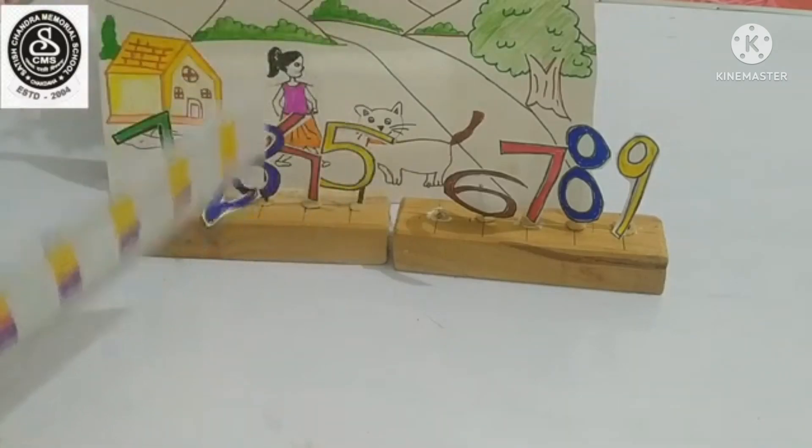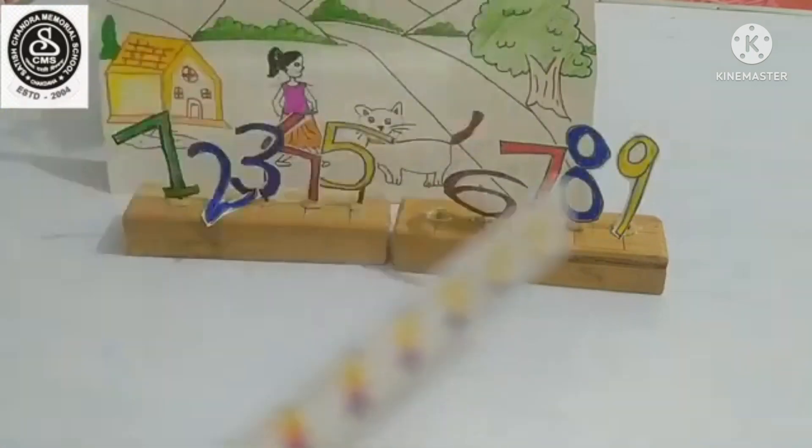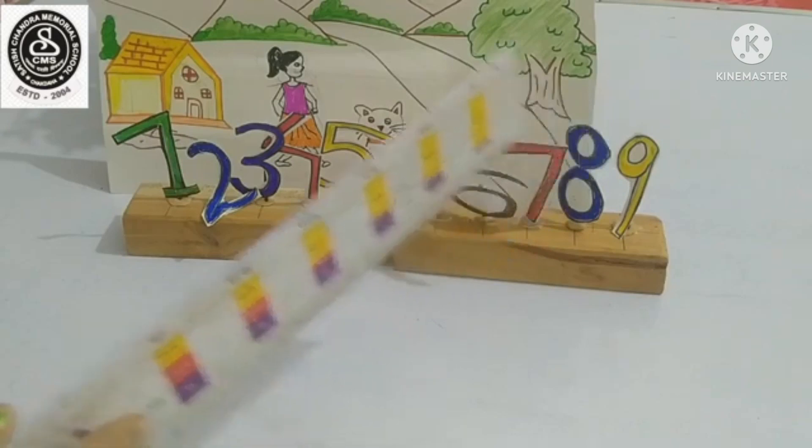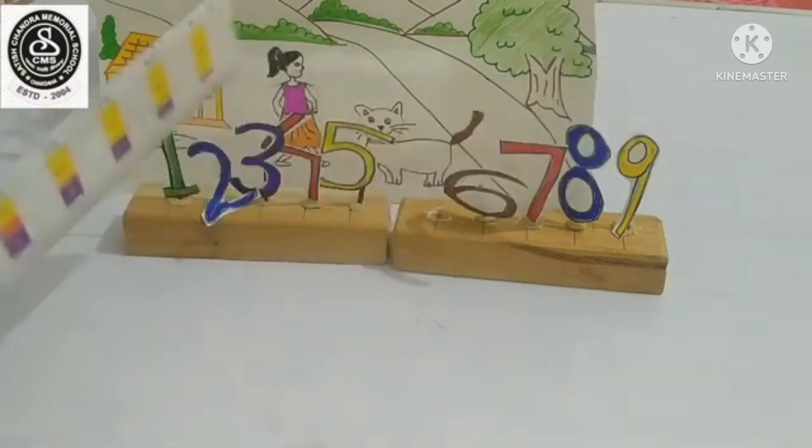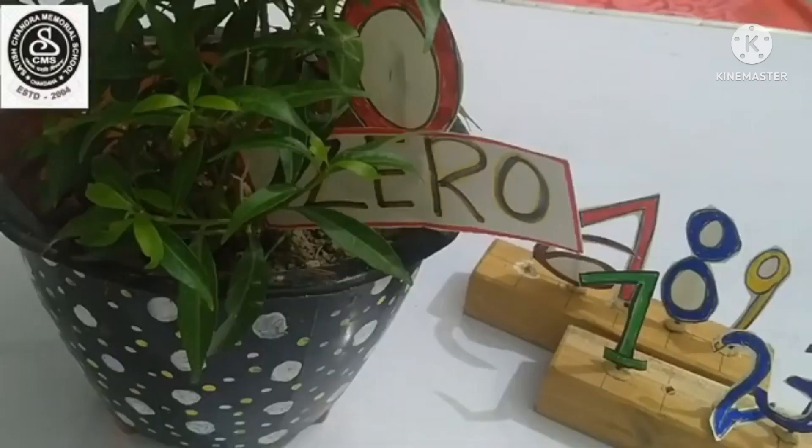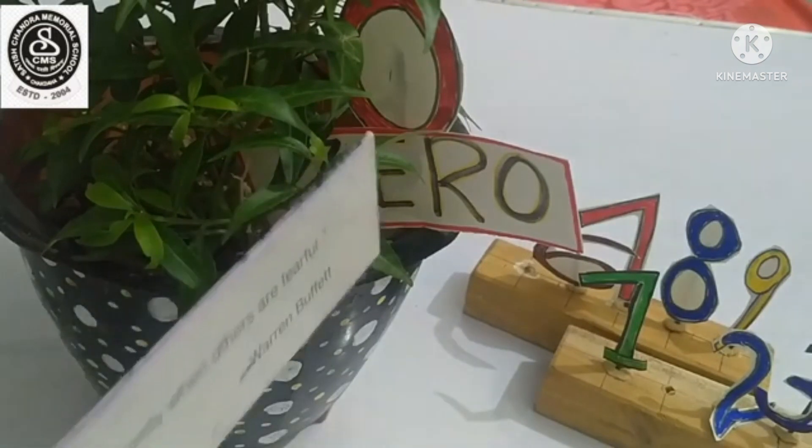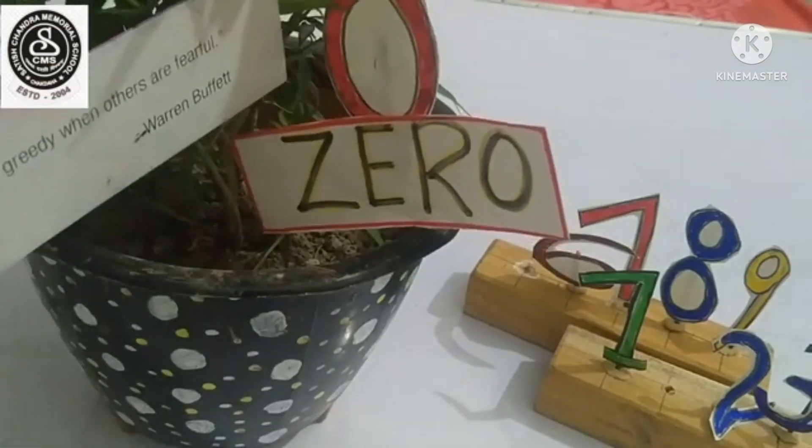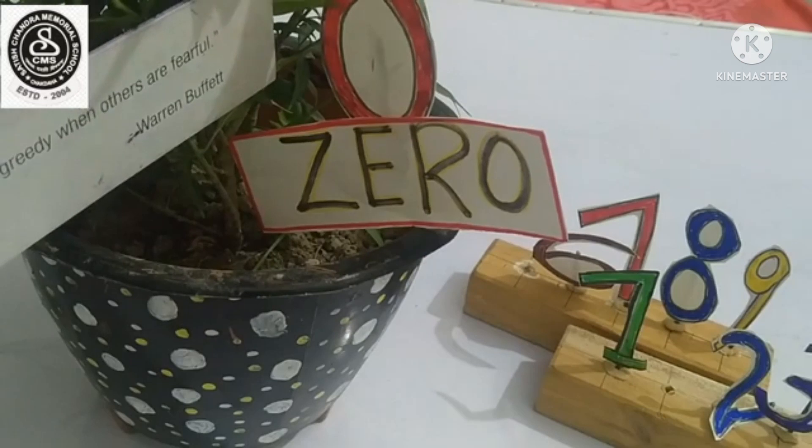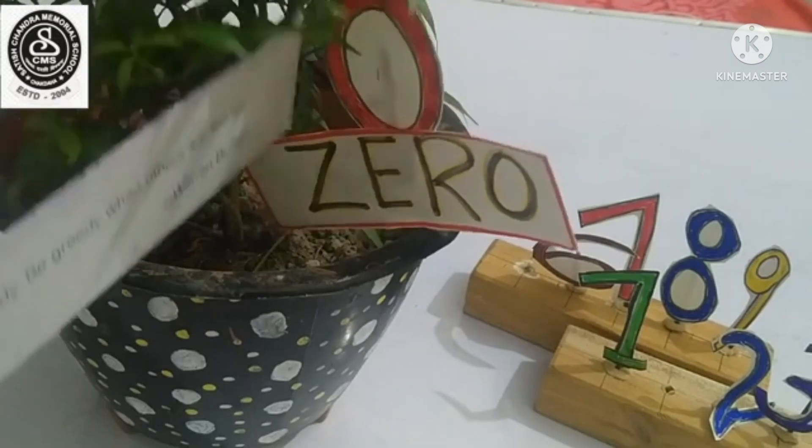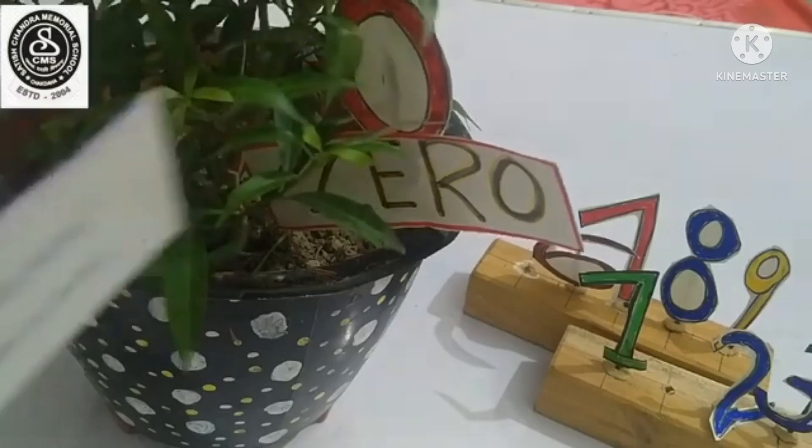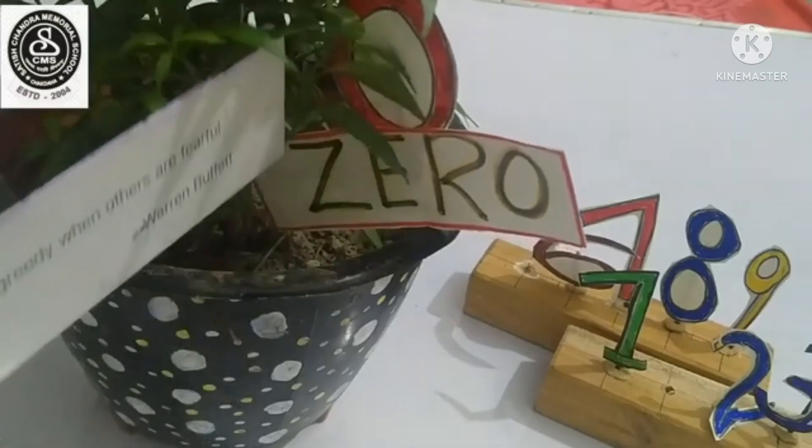The teacher ordered the numbers to find zero. All the numbers searched for zero, but they could not find him. At last, all the numbers found that zero is hiding behind the tree. Can you see? Zero is hiding behind the tree.